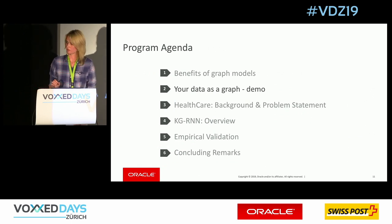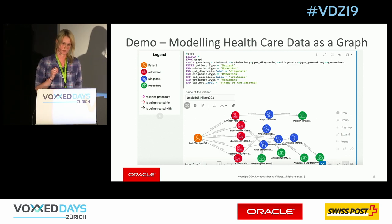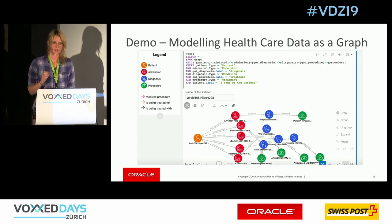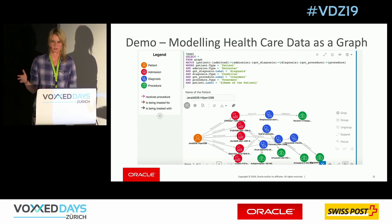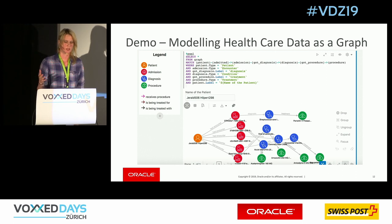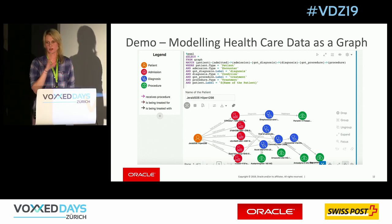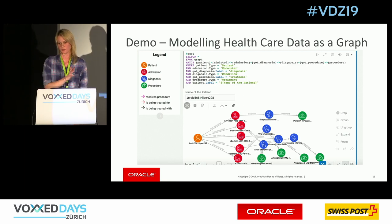I'd like to start with the demo. The technology we're going to use is called Oracle Labs Data Studio — a notebook approach from Oracle. Like Zeppelin or IPython, you can run any programming language such as Python, Spark, or R in paragraphs. What we did is integrate PGX so you can load your data into a graph, do graph visualization, and use PGQL to query your graph.